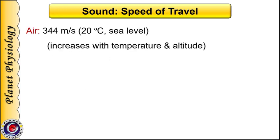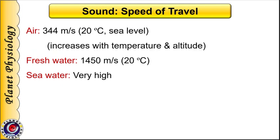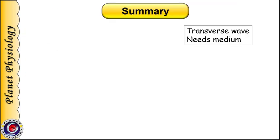Just a word about the speed of sound in various mediums. The speed of sound depends on temperature as well as altitude and hence the density of the medium. In air, sound travels at 344 meters per second at sea level when the temperature is 20 degrees Celsius. Water being a denser medium, velocity of sound is much higher — 1,450 meters per second in freshwater and even higher in seawater.